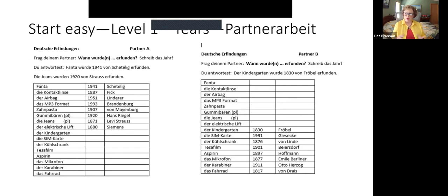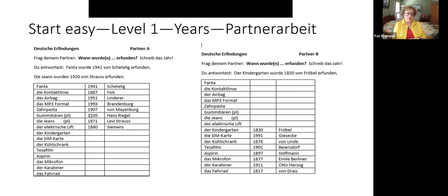Starting at level one — one of the first things students learn are numbers and dates. Here is a partner activity: one partner asks 'Wann wurde etwas erfunden?' and the other answers, for example, '1830, by Fröbel' — or however easy you want to make it. Just practicing dates to get them to use numbers correctly.